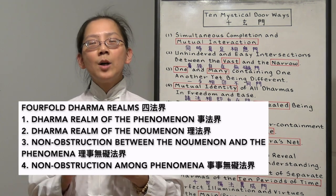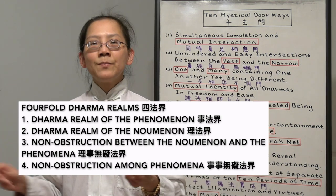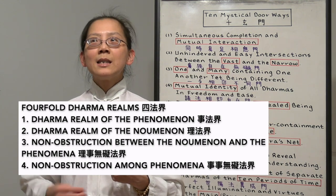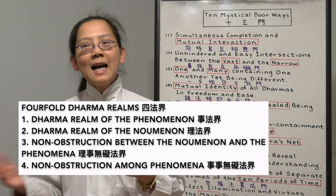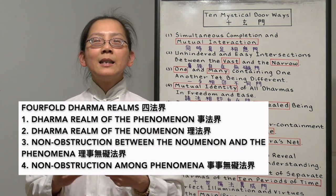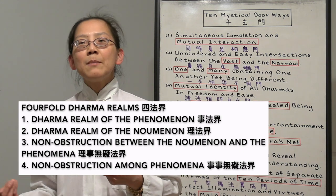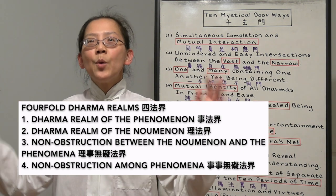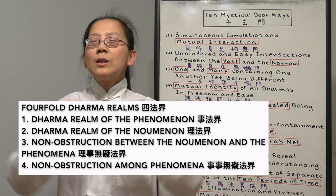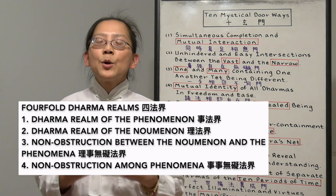The first world is the world of phenomena, which is the physical world that we live in. The second is the world of the noumenon, which is the world of the mind that is invisible. Then we have the world where there's non-obstruction between the phenomena and the noumenon. That means all the physical world is actually created by our mind and all the physical world is just the expression of our pure mind.